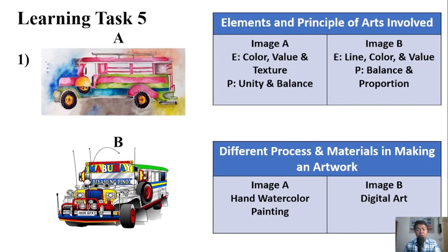Here are the possible answers. Image A elements: color, value, and texture are present. For principles of arts: unity and balance are present. For Image B elements: line, color, and value are present. For principles of arts: balance and proportion are present. For the different processes and materials in making an artwork — Image A: hand, watercolor painting. Image B: digital art.